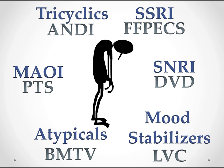I use the mnemonic Andy. Think of a little boy named Andy on a tricycle. The A stands for amitriptyline, the N for nortriptyline, the D for desipramine, and the I for imipramine.